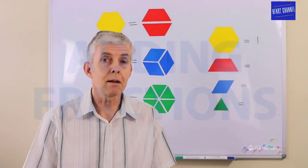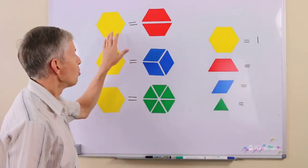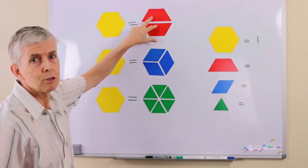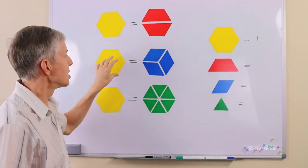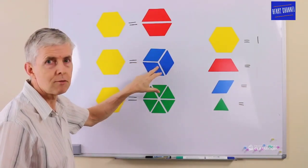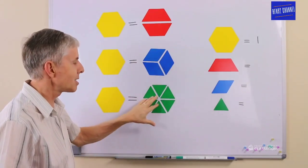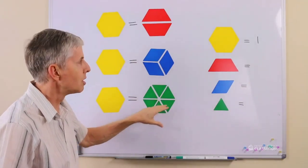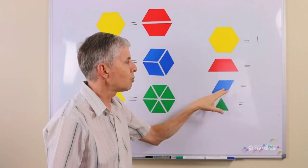Look at this, we can use pattern blocks for fractions. One yellow one is the same as two trapezoids or trapeziums. It's also the same as three rhombuses and it's the same as six triangles. So what is a red worth, what is a blue worth, and what is a green worth?